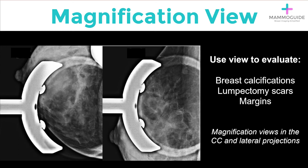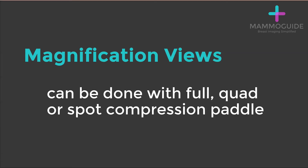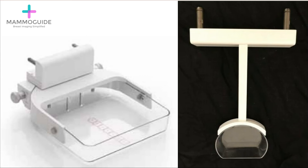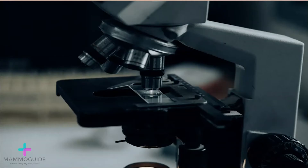Oftentimes, magnification views are performed in both the cranial caudal and lateral projections. Magnification views can be done using a standard mammographic paddle or they can be done using a quad or spot compression paddle depending on what your exam requires. If you use the spot compression plate and magnification in combination, it is referred to as a spot magnification view. The goal with magnification is to get a closer look at any potential abnormality, especially breast microcalcifications.